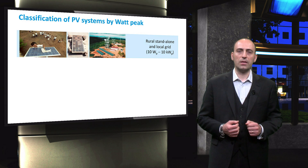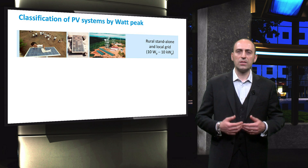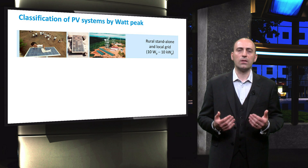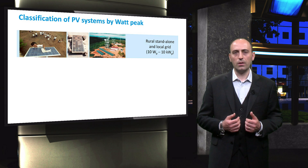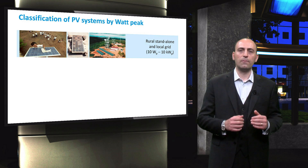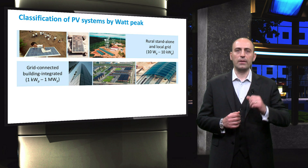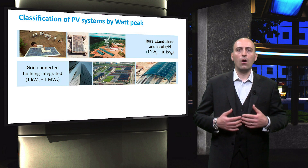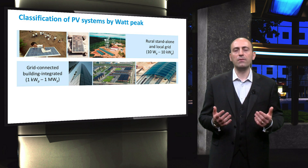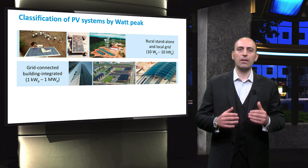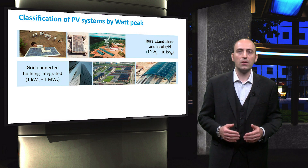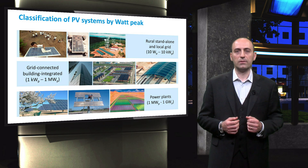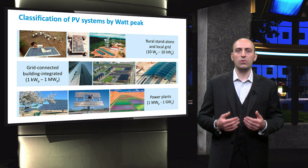Another way to classify PV systems is by installed peak power. In the first category, we have rural or standalone systems with eventually a local grid. In this case, the rated power is quite low, between 10 watt-peak and 10 kilowatt-peak. Going up in power, there are grid-connected building-integrated systems, which can be found for example on the façade of a skyscraper, on the rooftop of residential buildings, and on train stations. This topology is easily scalable from very small systems in the range of 1 kilowatt-peak to megawatt-peak scale installations. Finally, we have power plants with a peak power of several megawatts, which are connected to the electricity grid via three-phase inverters.